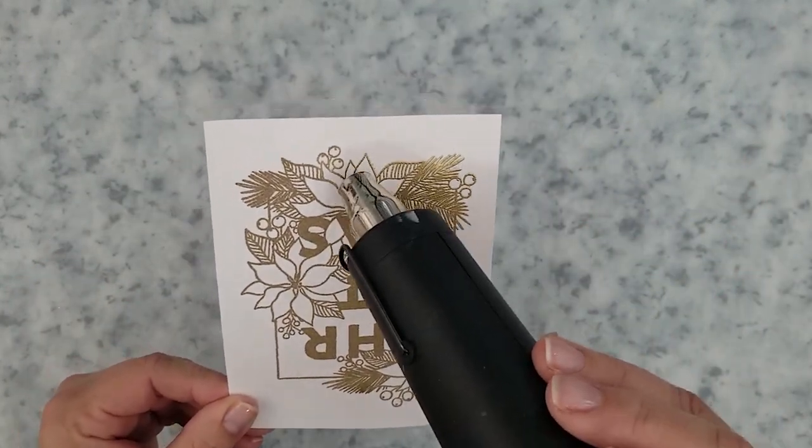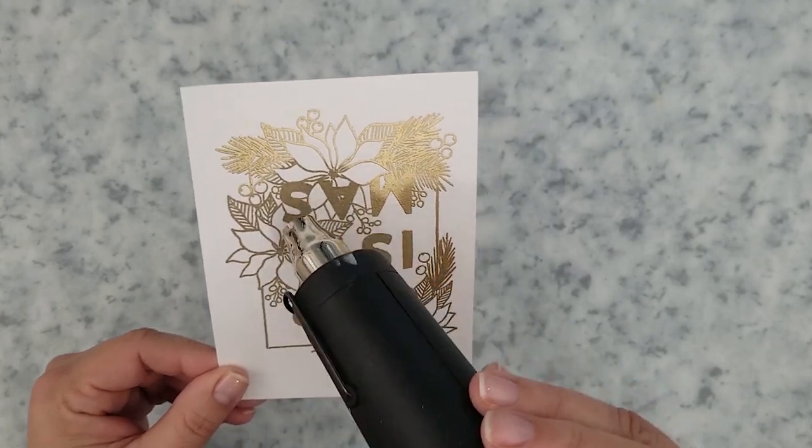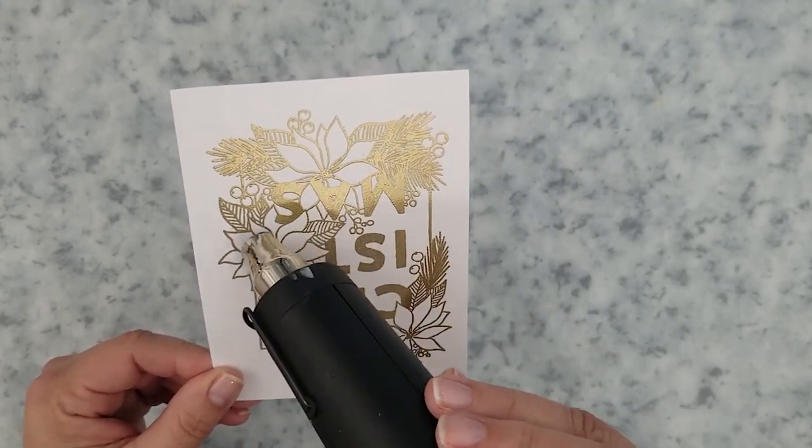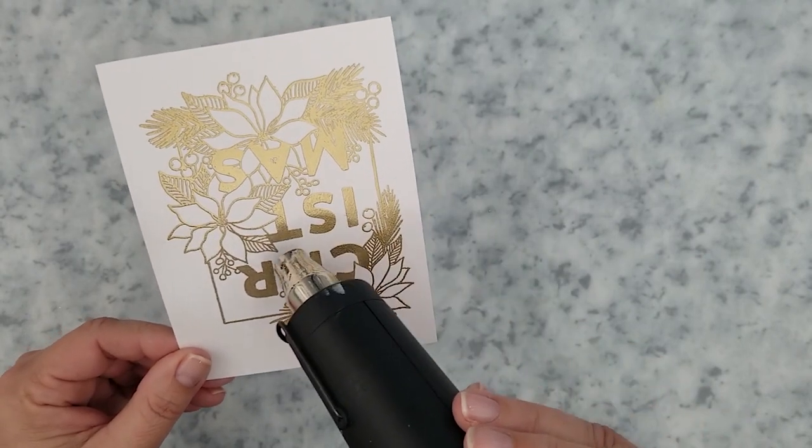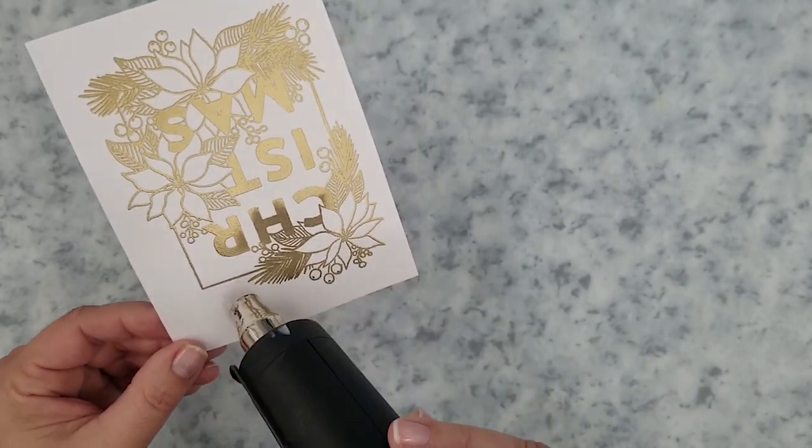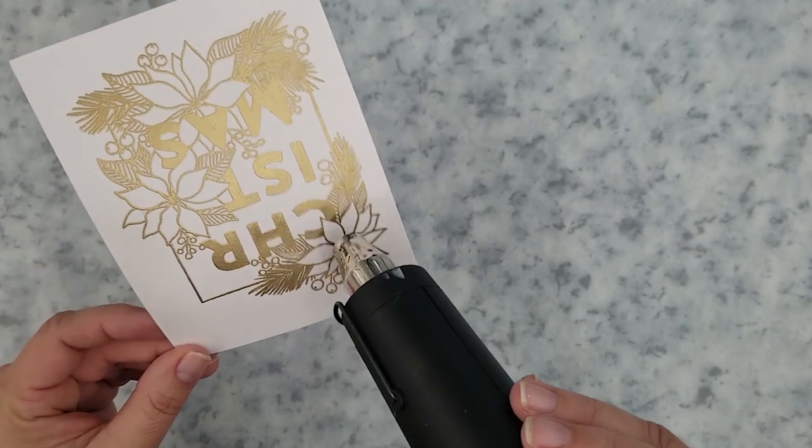As always, preheat your gun. It helps reduce the warping of your paper. Keep the heat gun moving so you don't burn the paper or the powder, and then you're just gonna chase that melting powder with your heat gun. Now you'll know when it's done because it becomes smooth and dimensional.